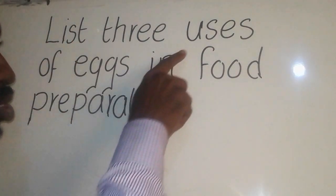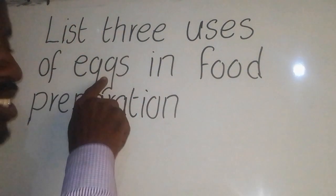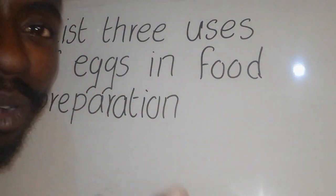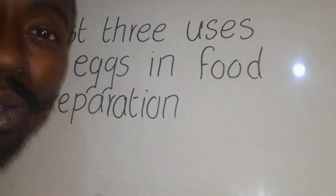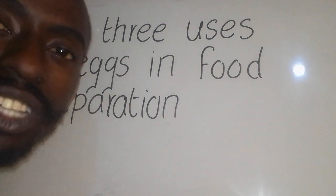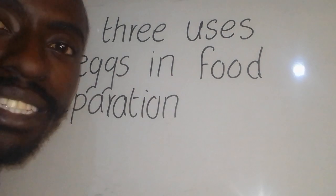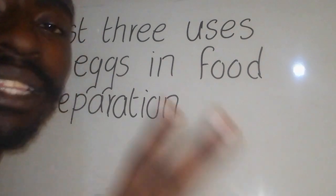Now, the question is talking about uses of eggs. Number one, eggs help in cake making. How? They help to form the structure and the stability of the batter.